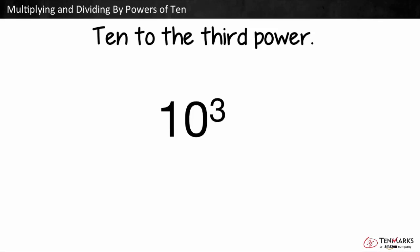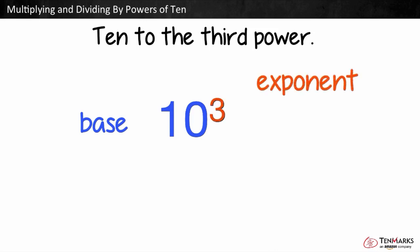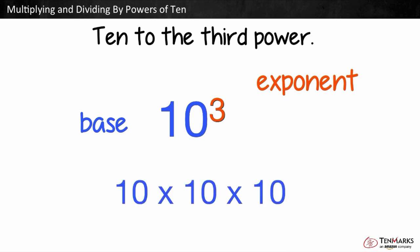This is 10 to the third power. 10 is the base and 3 is the exponent. The exponent tells us how many times to multiply 10. Here we are multiplying 10 three times.